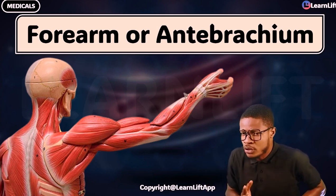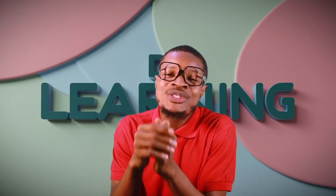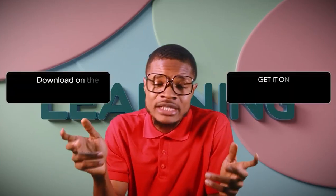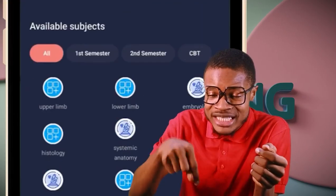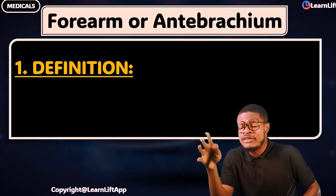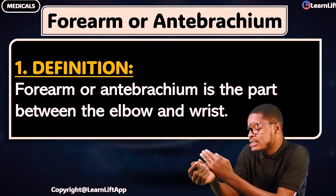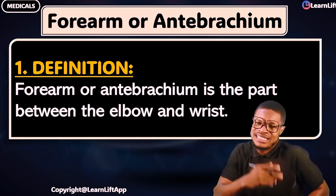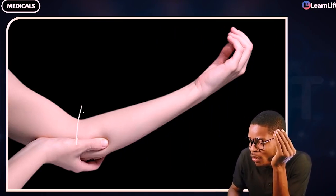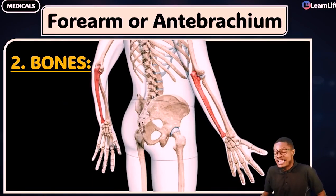What must we know about the forearm or anti-brachium? First, the definition: the forearm or anti-brachium is that part between the elbow — the elbow is the cubitus — and the wrist. That part between the elbow and the wrist is called the forearm or anti-brachium.